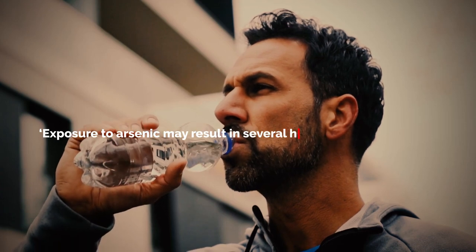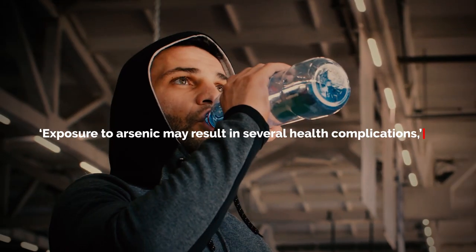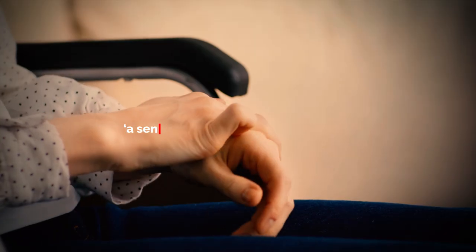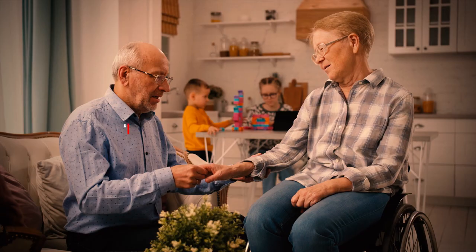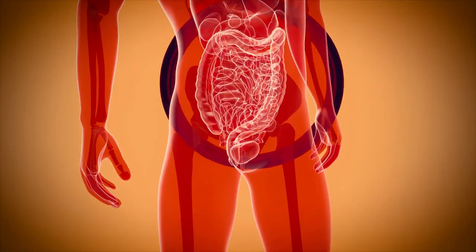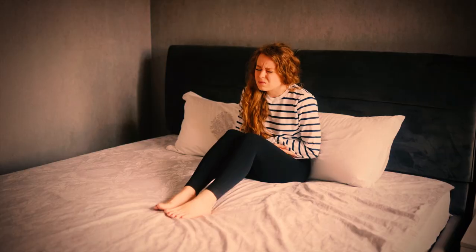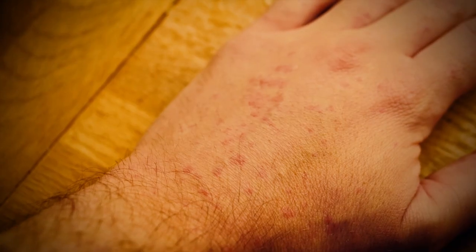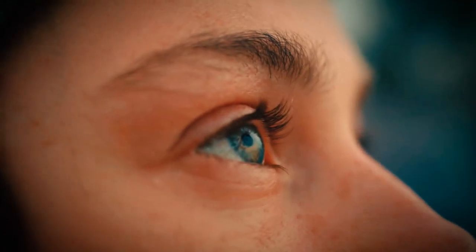Exposure to arsenic may result in several health complications, including the onset of partial paralysis, a sensation of numbness in the extremities, specifically the hands and feet, gastrointestinal symptoms such as vomiting, nausea, abdominal discomfort, and diarrhea, changes in skin color or pigmentation, and loss of vision or blindness.